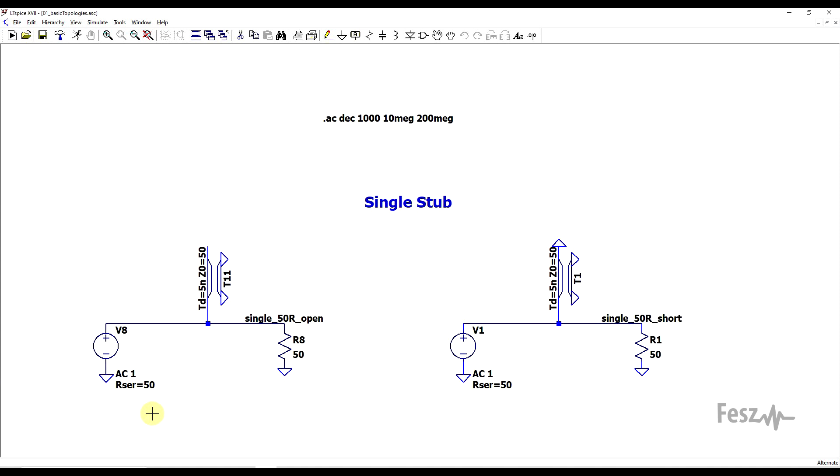So just as an example, I took a basic 50 ohm, 5 nanosecond long transmission line, which behaves like a quarter wavelength at 50 megahertz and as a half wavelength at 100 megahertz, and I connected this to a 50 ohm signal source and a 50 ohm load.